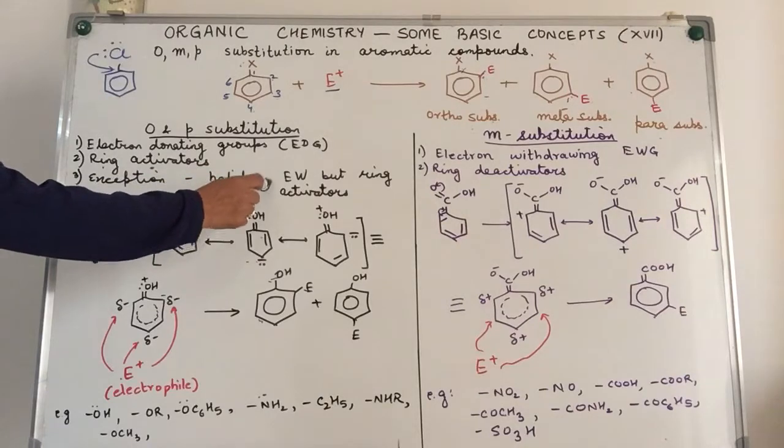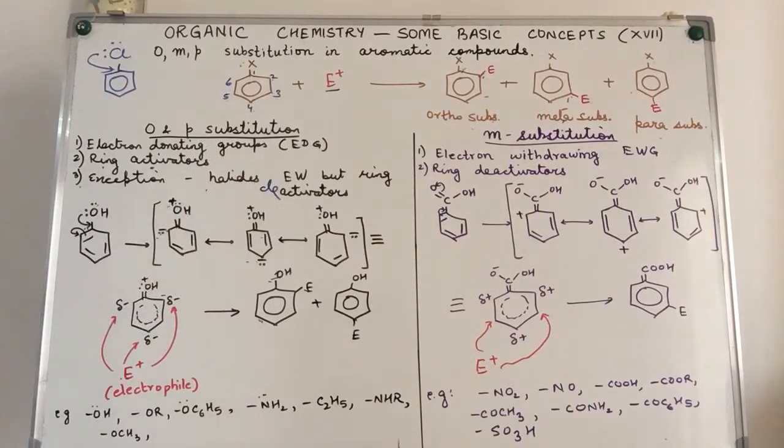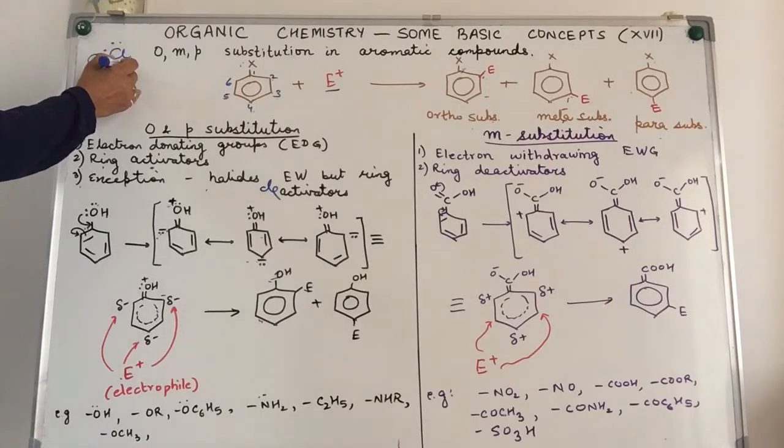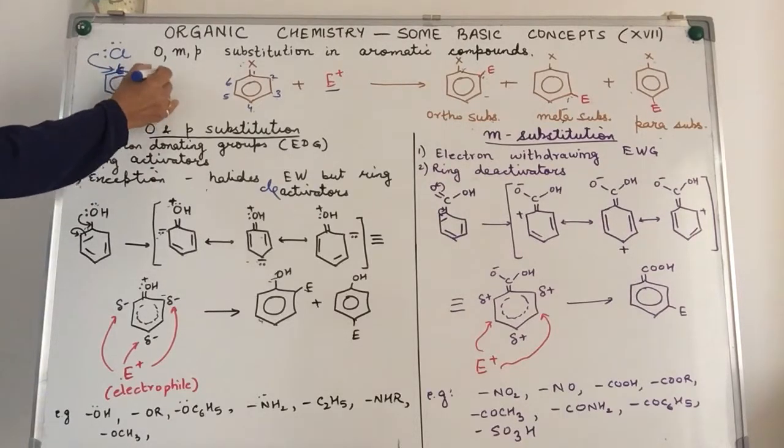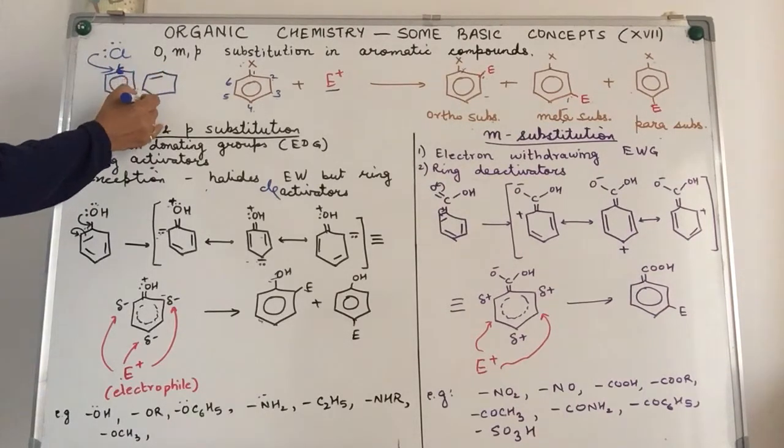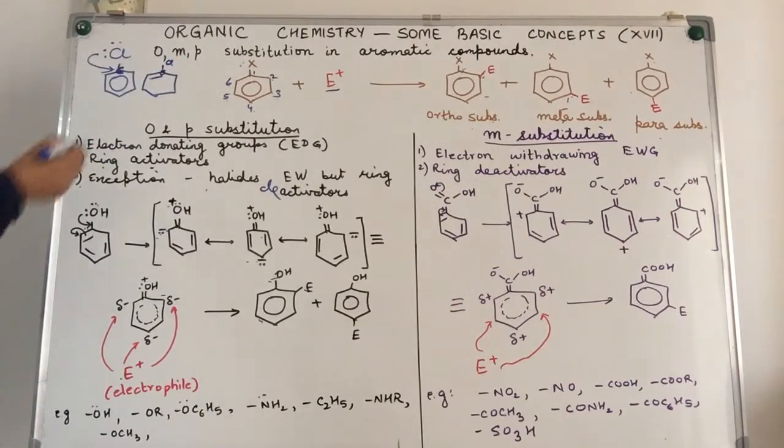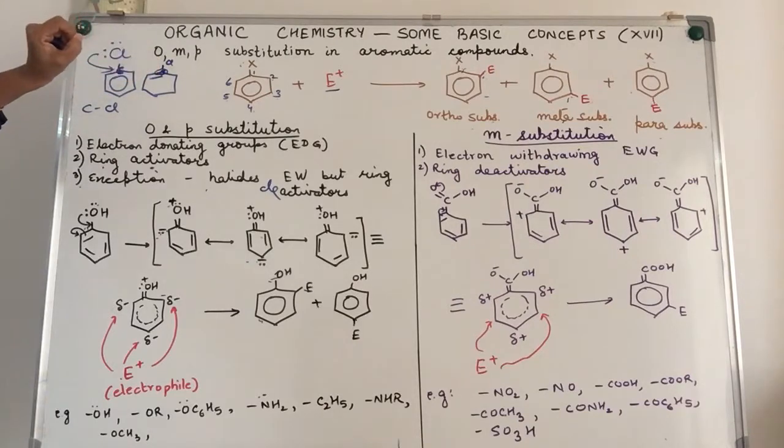So they are ring deactivators but ortho-para-directing. Also, the carbon to which they are attached, if you notice, it is sp2 hybridized because it is forming a double bond. So this carbon attached to Cl is actually sp2 hybridized. Compared to an sp3 hybridized carbon, the bond length in sp2 is smaller. Because of which it doesn't allow the chlorine to pull the electrons so easily from the pi bond.